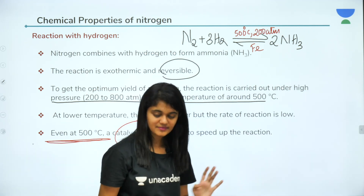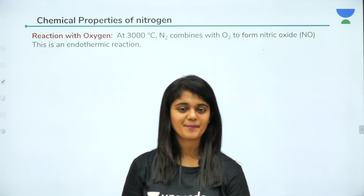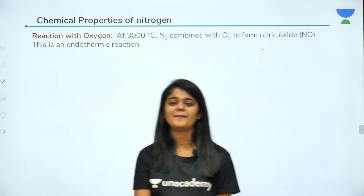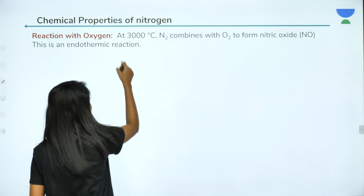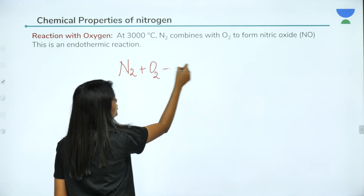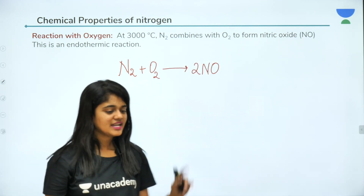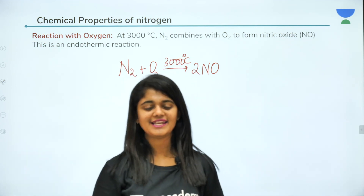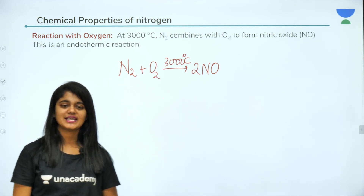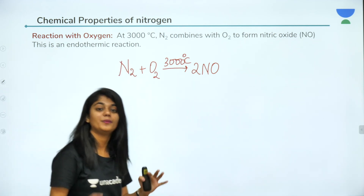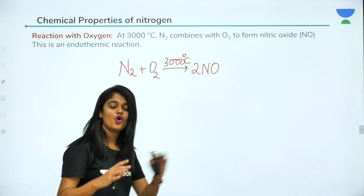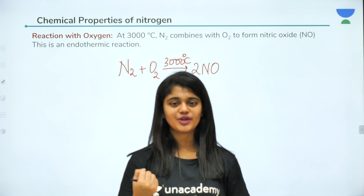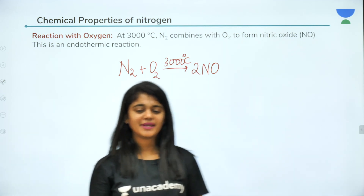Similarly, reaction with oxygen: at 3000 degrees Celsius, N2 combines with O2 to form nitric oxide. Equation: N2 + O2 → 2NO. The speciality of this reaction is that it is endothermic in nature — energy is absorbed during the process to break the bonds. N2 has a triple covalent bond and O2 has a double bond, so energy is required to break these bonds and form the new molecule.